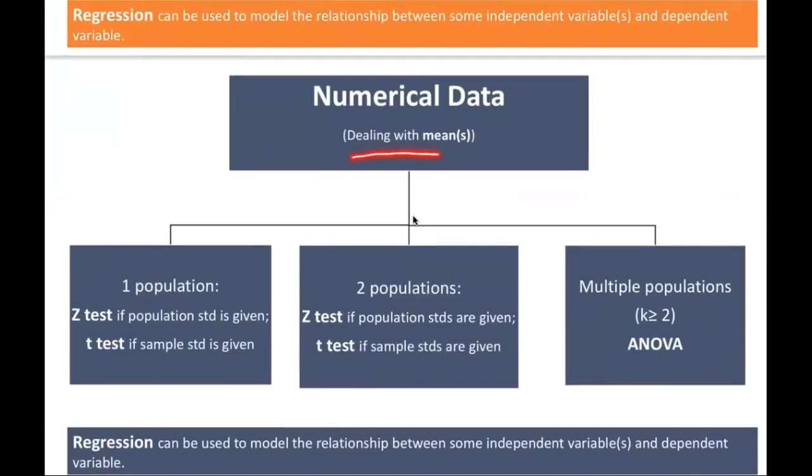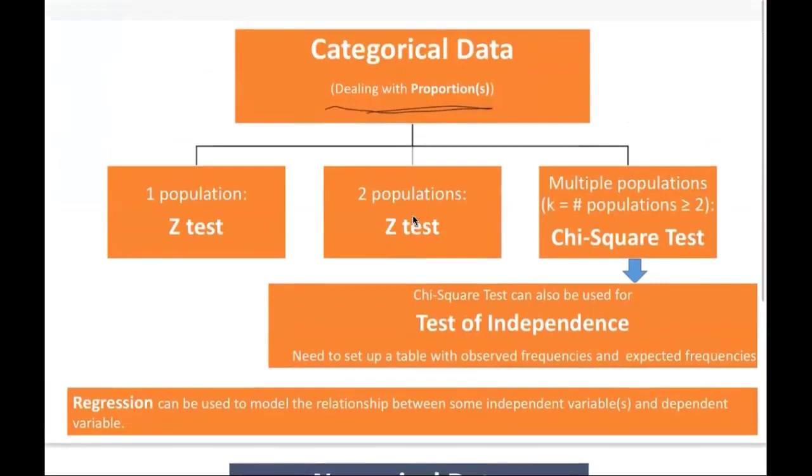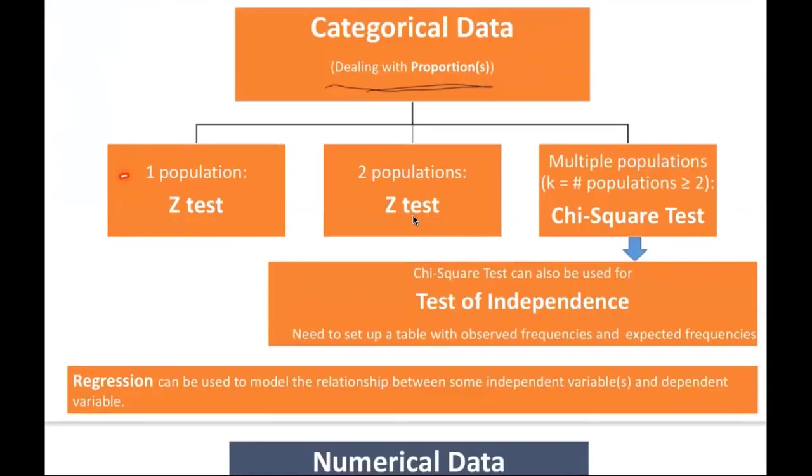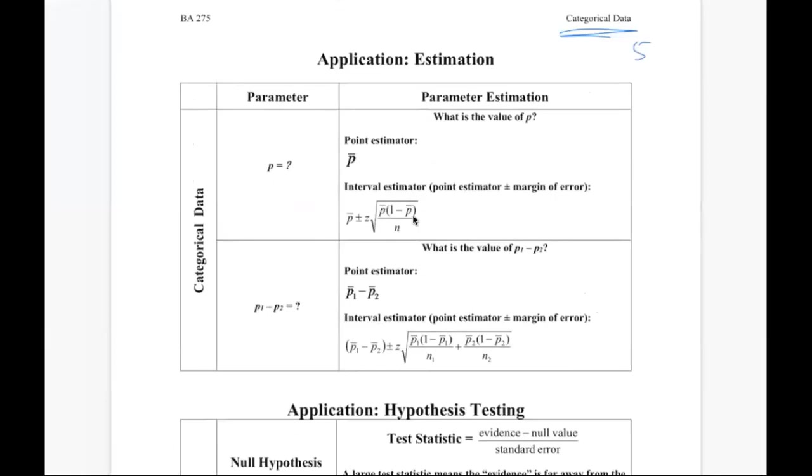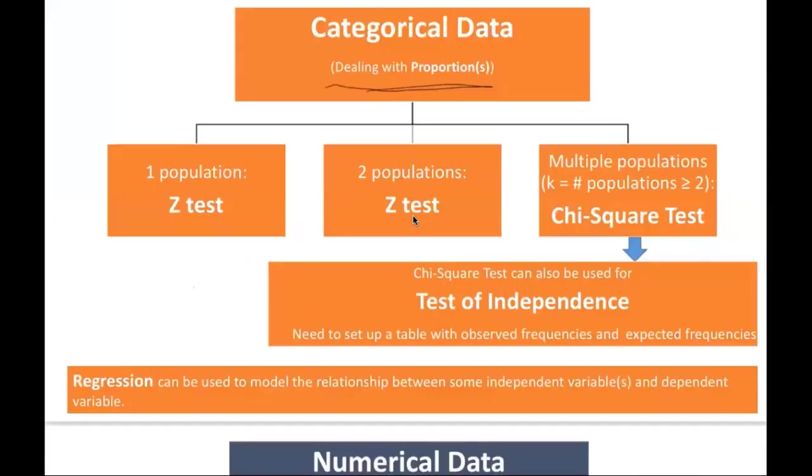This is the first one. The next one is numerical data dealing with means, right? Typically we are dealing with means and numerical is going to be quantity. Something that can be measured, for example, your salary, height, weight, you know, number of items being produced by machinery. And so we learned a bunch of tools. As we can see, let's take a look. When you are dealing with one population for categorical data, it's always a Z-test. If you're dealing with two populations, it's also a Z-test, but the formula is more complicated.